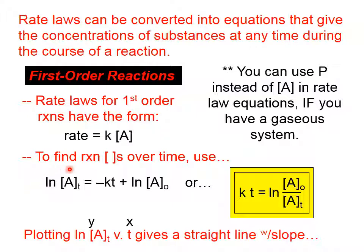In this equation, not the one in yellow, the left side is y, the time is x. This thing is the y-intercept and that means that the slope is equal to the opposite of the rate constant. So if you plot this and you find the slope, it will come out negative. Throw the negative sign away and whatever number that is, that's the value of the rate constant.